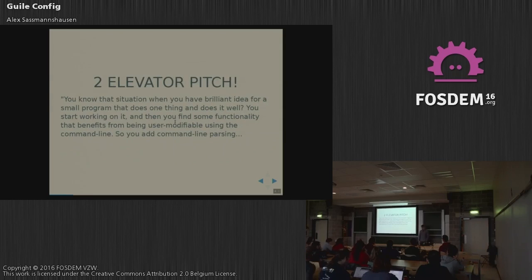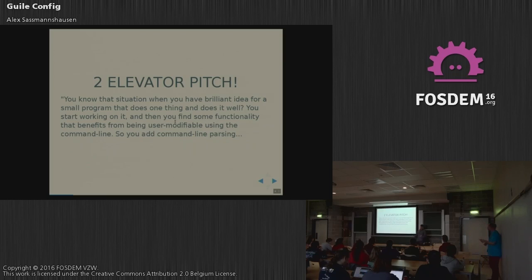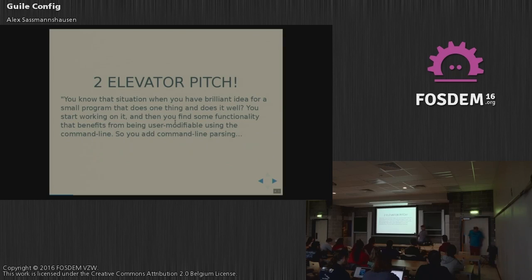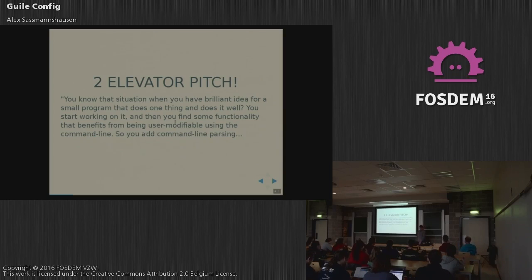So I have an elevator pitch. You know the situation where you're trying to write a command line utility — you have an awesome idea for a quick little program that does one thing and does it well. You start working, make great progress, have a prototype version, and it works wonderfully. Then you get some people to start using it, they point out a different use case, and that use case could require a command line flag. So you build that in and people can specify it on the command line — so you have command line parsing.